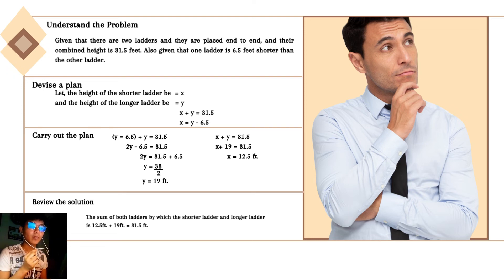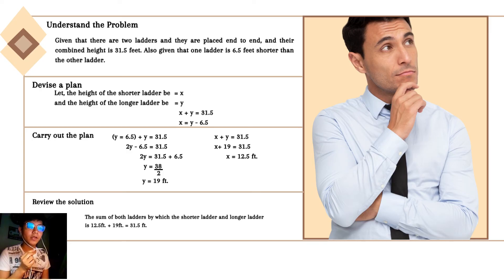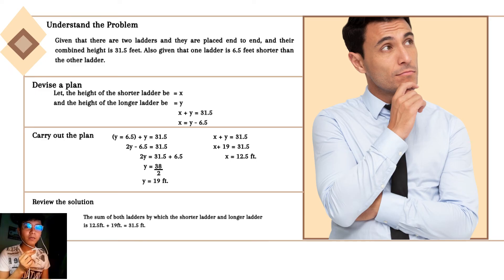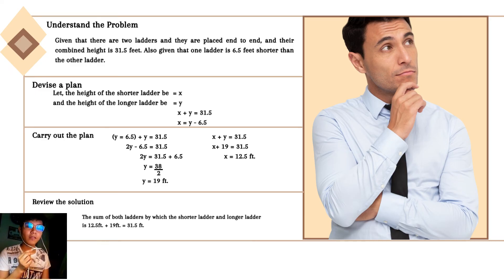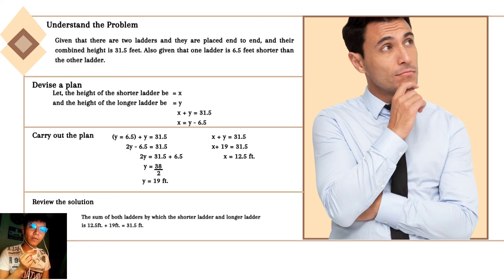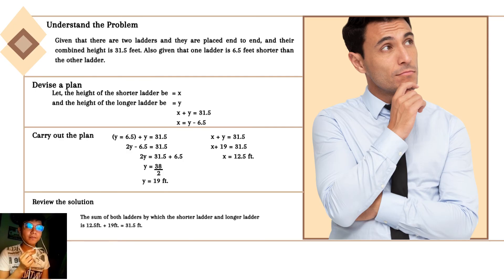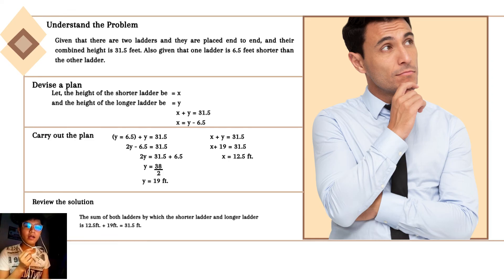And moving on, we're going to solve for the X. X plus Y is equal to 31.5. X and the given Y, which is 19. X plus 19 is equal to 31.5. Then X will be 31.5 minus 19. So the X value is equal to 12.5.